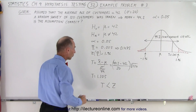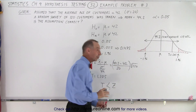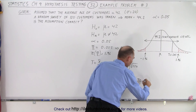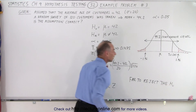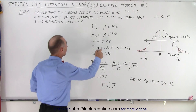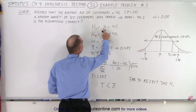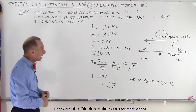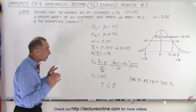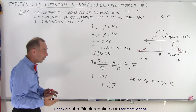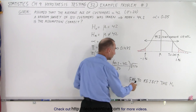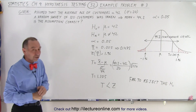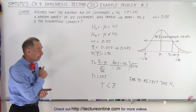Since it doesn't fall into the critical region, we fail to reject the null hypothesis. The null hypothesis claimed the population mean — the average age of customers — was equal to 42. With a sample of 120 randomly selected customers yielding a sample mean of 44.2, we can say with 95% confidence that the null hypothesis is not rejected. It is therefore assumed with 95% confidence that the average age of customers in the bank is 42 years old.